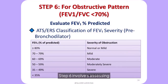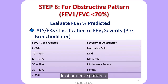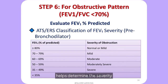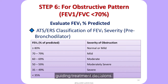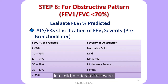Step six involves assessing FEV1 percentage predicted in obstructive patterns. The ATS classification helps determine the severity of obstruction, guiding treatment decisions. It categorizes obstruction into mild, moderate, or severe.